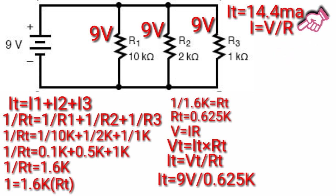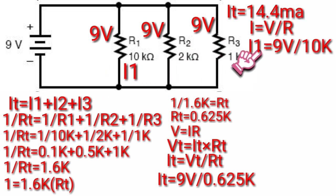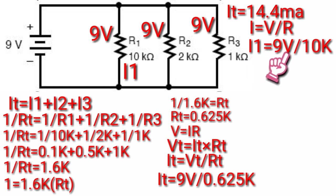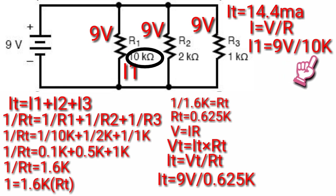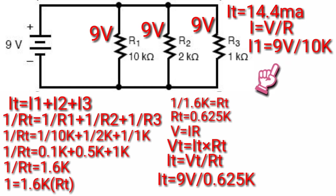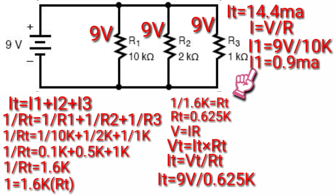Let's calculate the current from resistor one. I1 is equivalent to voltage 9V divided by R1, 10K. Therefore I1 will be 0.9mA.